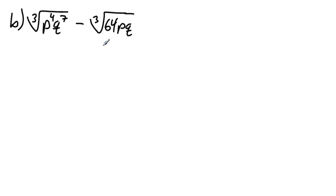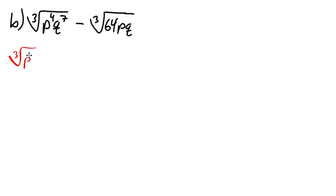Now for problem B, we introduce variables with exponents. We have the third root of p to the fourth times q to the seventh, minus the third root of 64 times p times q. From the last section, we can break this down into two radicals: the third root of p to the fourth times the third root of q to the seventh.